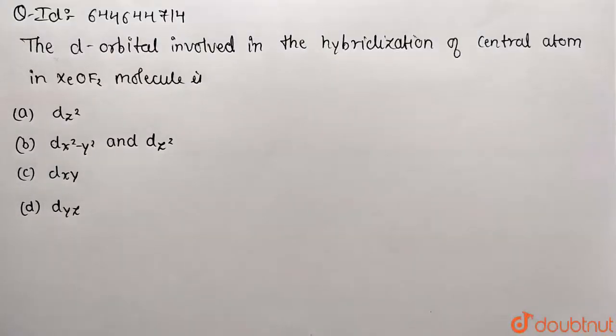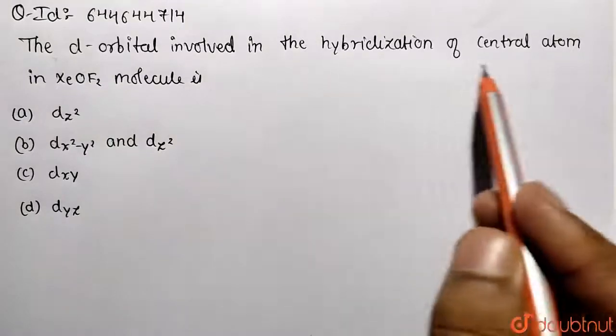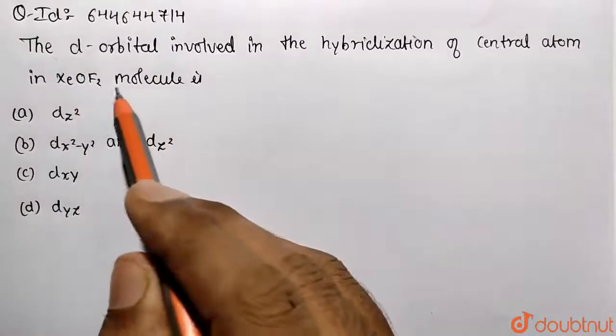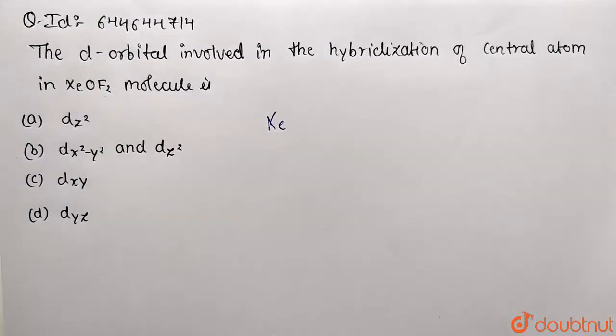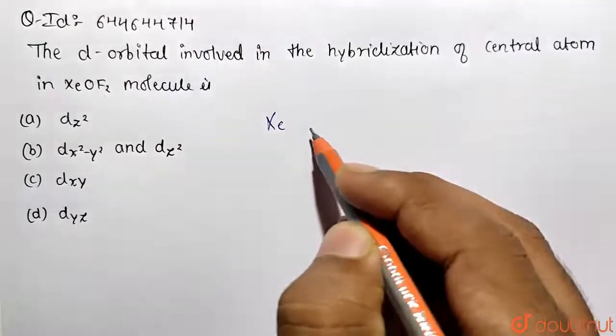We need to identify the d orbital that is involved in the hybridization of the central atom in XeOF2 molecule. So the molecule given to us is XeOF2. We need to think about the central atom, that is xenon.